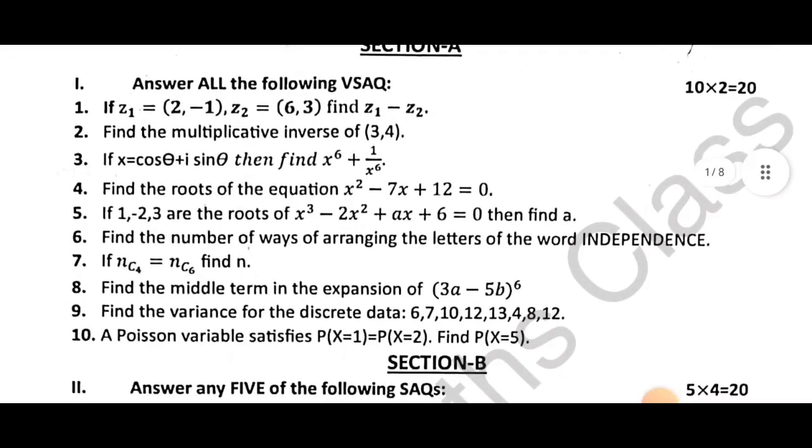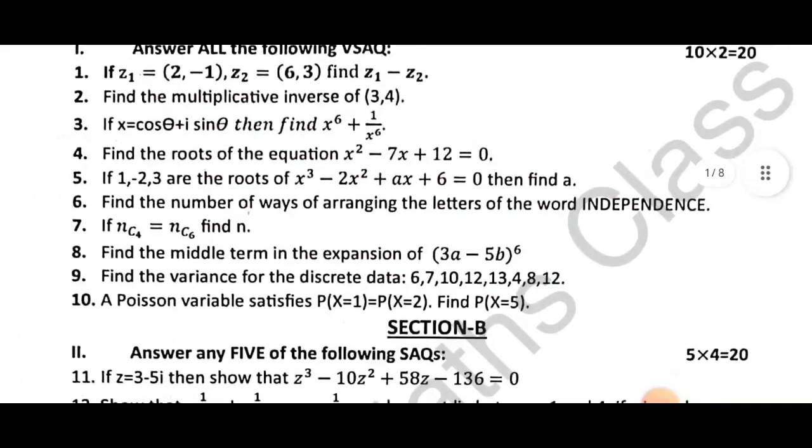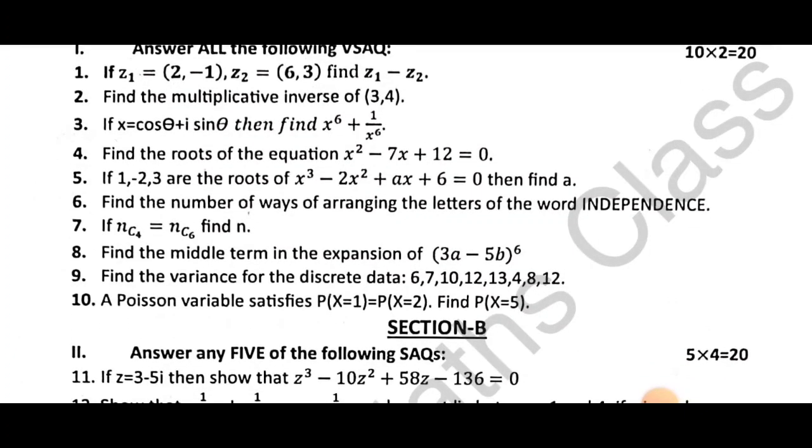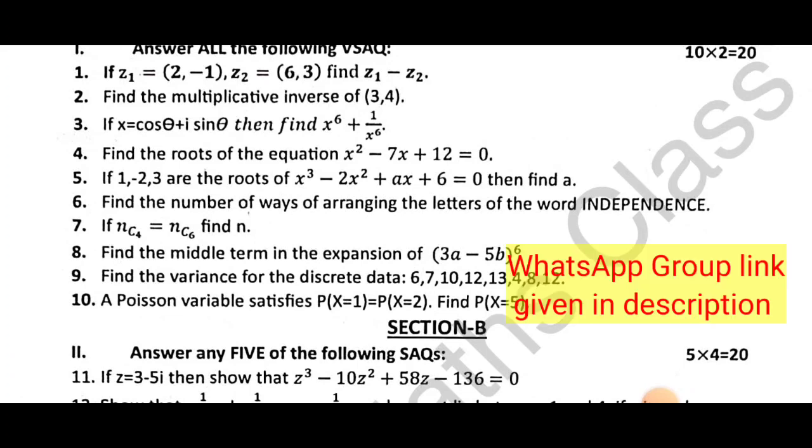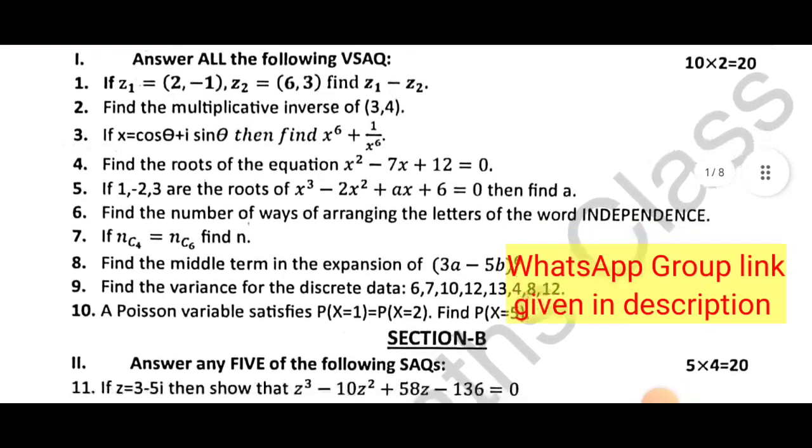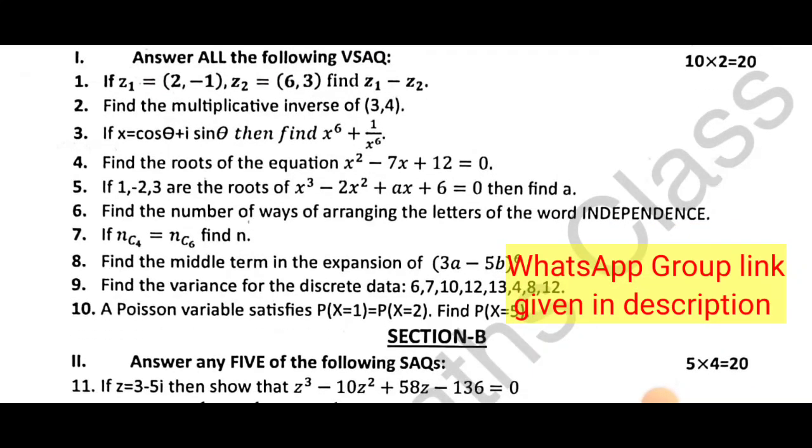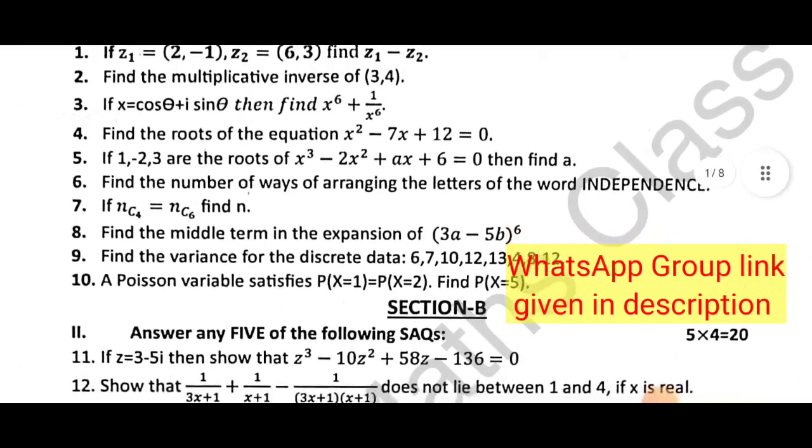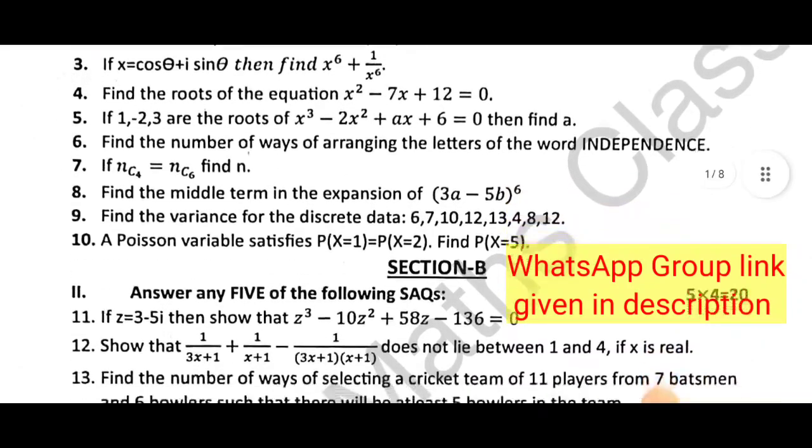So, z1 given, z2 given complex number - z1 minus z2 find. Second question is multiplicative inverse of (3,4). Third question has two problems. Fourth question is roots find - quadratic equation.